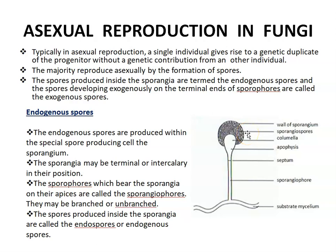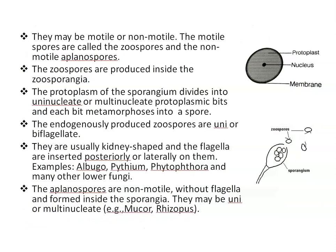Terminal means when present at the tip; intercalary means in between two cells. Sporangiophores bear the sporangia on their apex. Spores produced inside the sporangium are called endospores or endogenous spores. These spores may be motile or non-motile. Non-motile means without any flagella, and non-motile spores are called aplanospores — these are thick-walled spores. Motile spores are called zoospores.